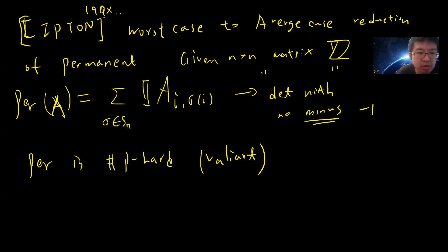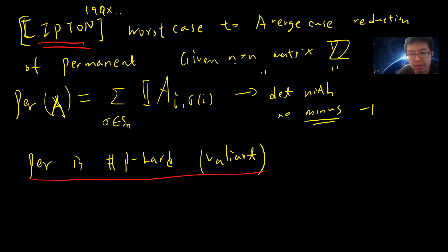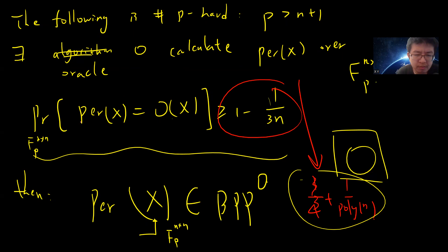Hey, what's up guys. In the previous video I gave the proof of Lipton's proof on the worst-case to average-case reduction of permanent. Basically, we proved that permanent should be hard: if you have an oracle which can compute permanent over a finite field up to probability 1 minus 1 divided by 3n, then you can compute the permanent exactly in polynomial time.